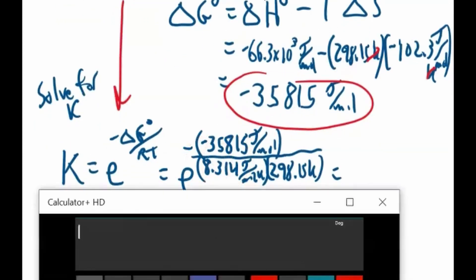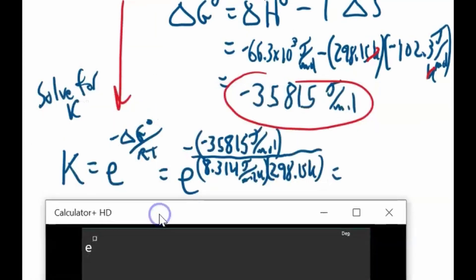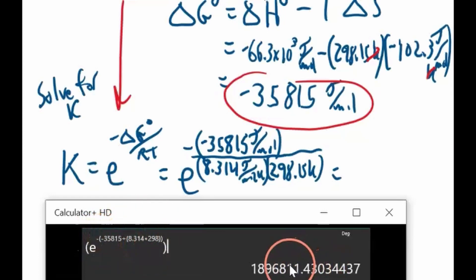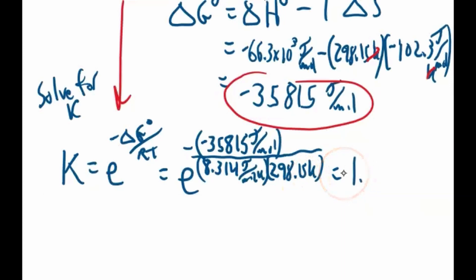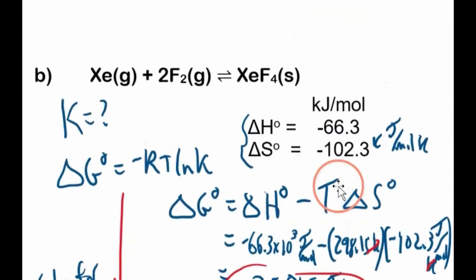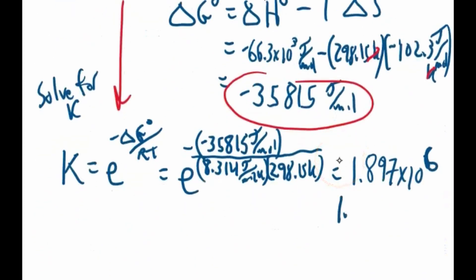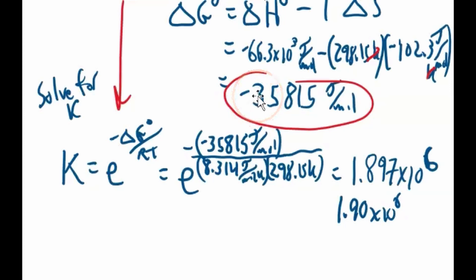The result is a huge number: K = 1.897 × 10⁶, unitless. With 3 sig figs: 1.90 × 10⁶. It's a huge equilibrium constant. Since ΔG° is negative, the reaction is spontaneous to the right — products are favored, which is consistent with the very large K value.